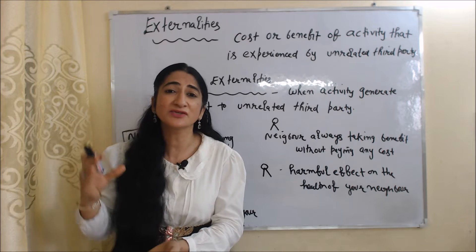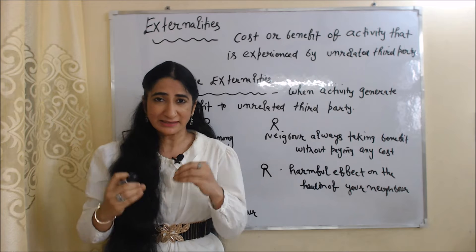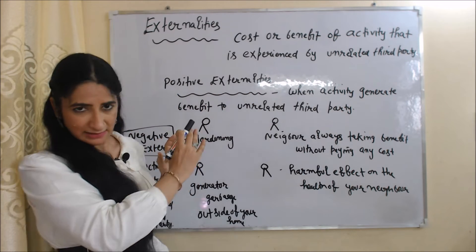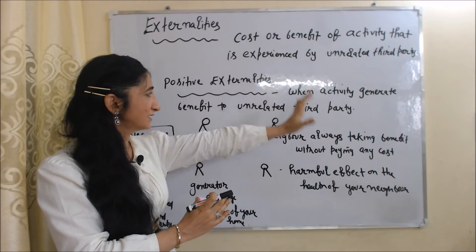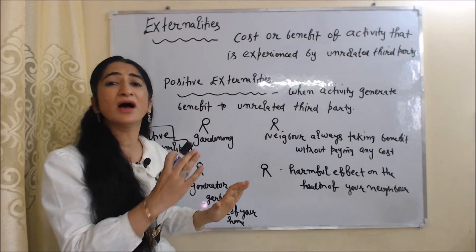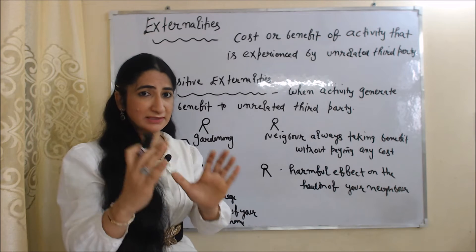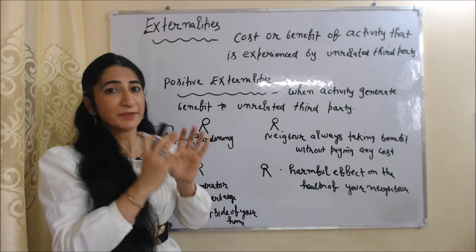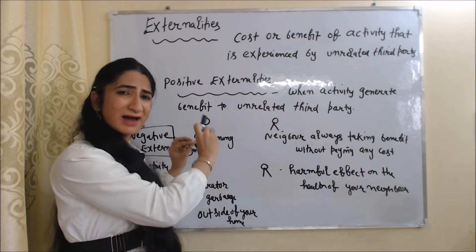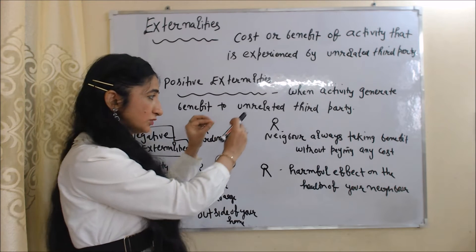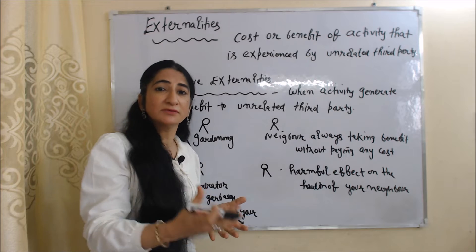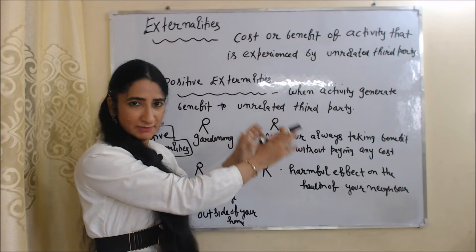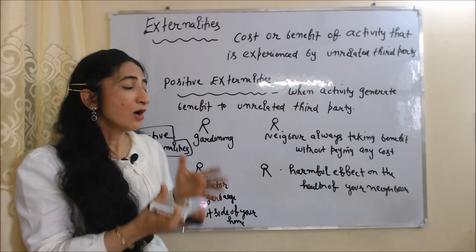Externalities basically have two types: positive externalities and negative externalities. Positive externalities means when an activity generates a benefit to an unrelated third party. For example, you did gardening in front of your home and because of this your neighbor is also taking benefit without paying any cost — that is positive externalities.